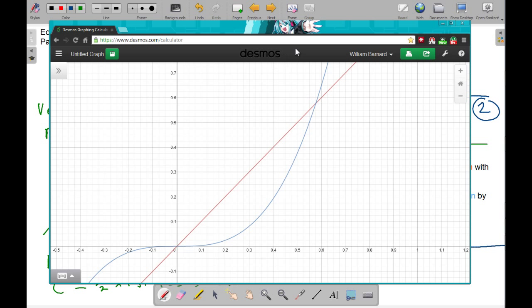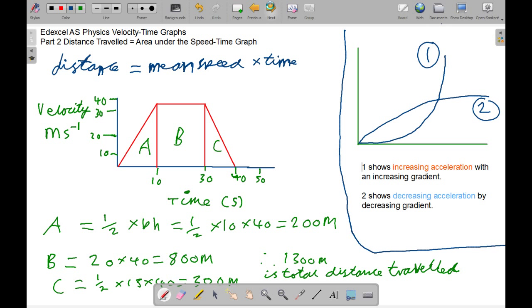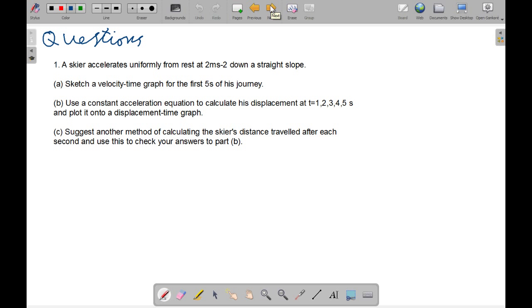So we'll now look at some questions. A skier accelerates uniformly from rest at 2 meters per second squared down a straight slope. Sketch a velocity-time graph for the first 5 seconds of his journey. Use a constant acceleration equation to calculate his displacement - this is one of the four equations of motion or SUVAT equations - at t equals 1, 2, 3, 4, 5 seconds, and plot it onto a displacement-time graph. Try and be accurate, or do a sketch to get the general idea of it. Either way I'm not fussed. Suggest another method of calculating the skier's distance traveled after each second, and use it to check your answers to part B.